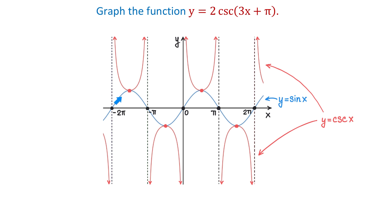Here we have the sine function in blue and the cosecant function in red. Because these two functions are reciprocals of each other, there is a relation between their graphs. At the x-intercepts of the sine function, the cosecant function has vertical asymptotes.